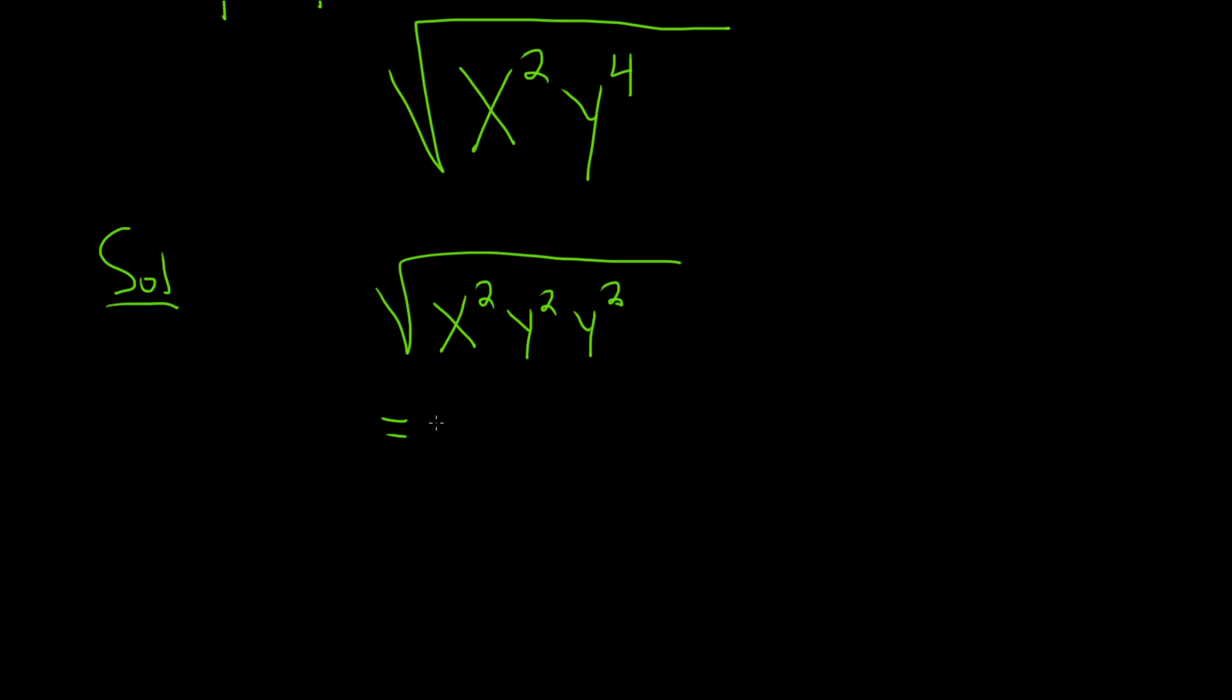So if you wanted to show an additional step, you can write this as the square root of x squared, the square root of y squared, the square root of y squared. And then we know this will just be x, y, y.